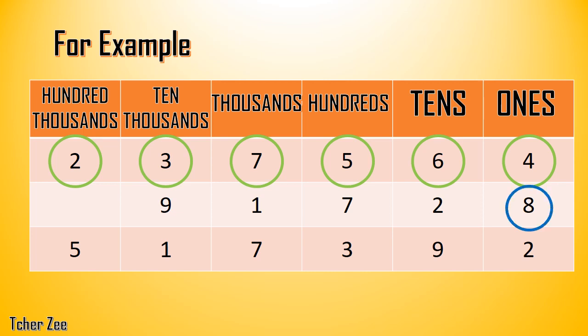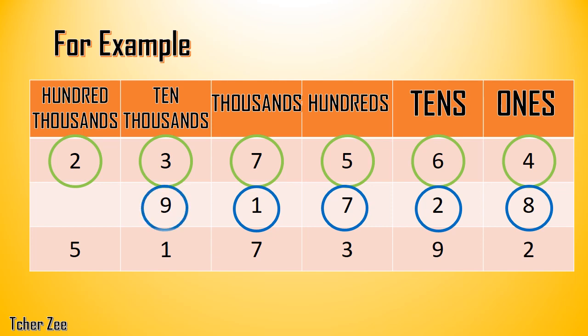What is the place value of 8? Yes, ones place value — very good. Place value of 2? Yes, tens place value. How about 7? Hundreds place value. And 1? Thousands place value — very good. And 9 is? Okay, that's ten-thousands place value.